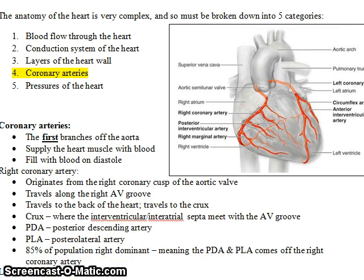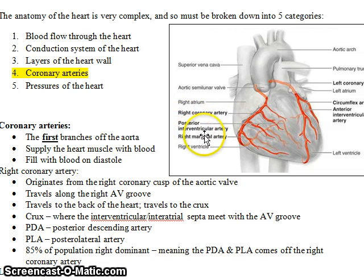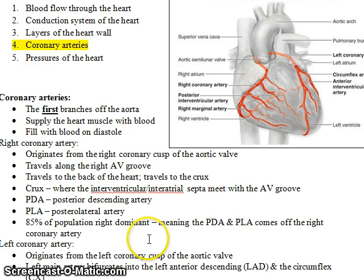There are several important branches off the right coronary artery, but the two most important are the PDA and PLA. The PDA is the posterior descending artery, also called the posterior interventricular artery. 85% of the population is right dominant, meaning that the PDA and PLA come off the right coronary artery — the right coronary courses around to the back of the heart and gives off the PDA and PLA.